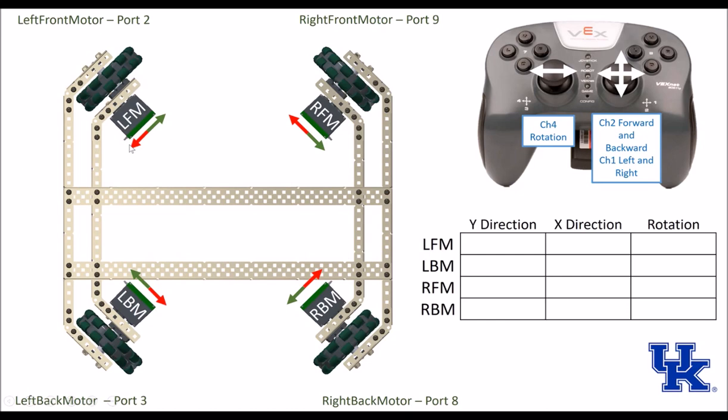For the remote, on channel 4, when we take it to the left it rotates counterclockwise, and when we take it to the right it rotates clockwise. Channel 2 will be our forward and back, and channel 1 will be our left and right.